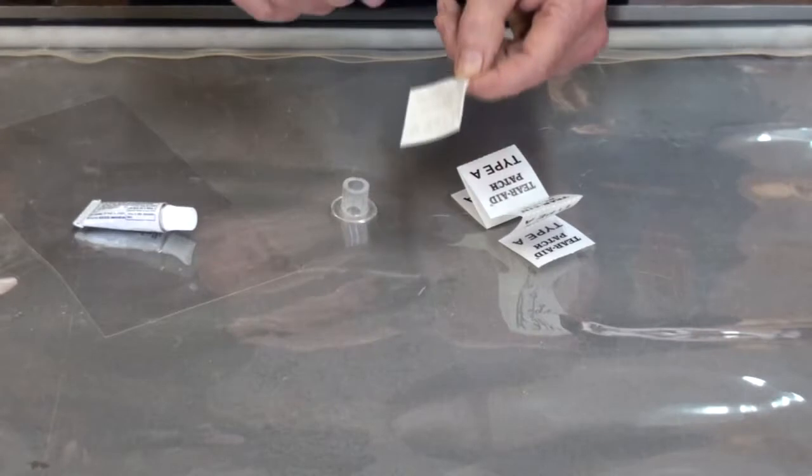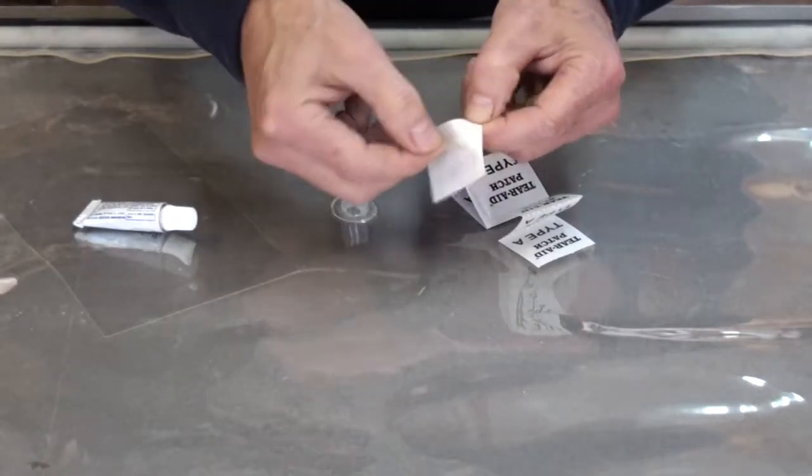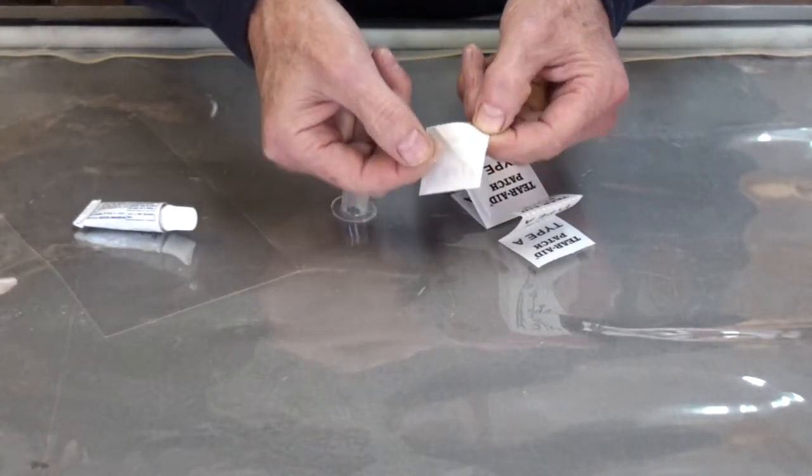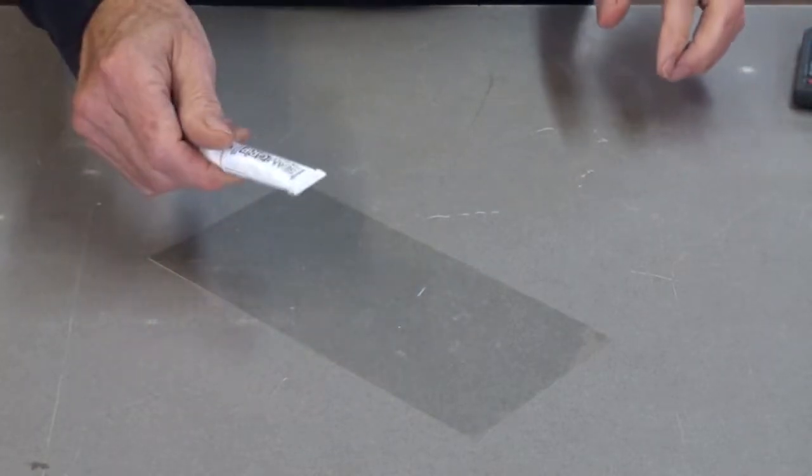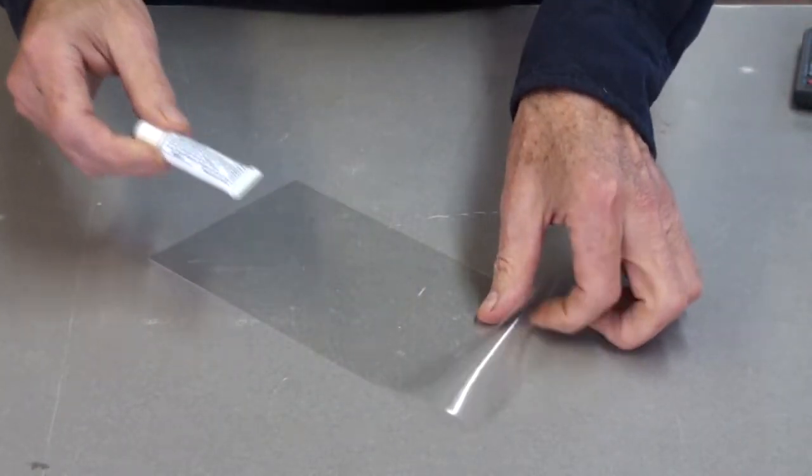All of this can be easily done with these items. For small punctures, the sticky back patches will do the job. For something a little larger, this tube of flexible glue and some bag material will repair the hole or tear.